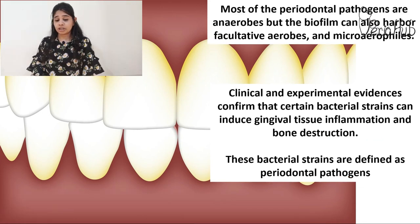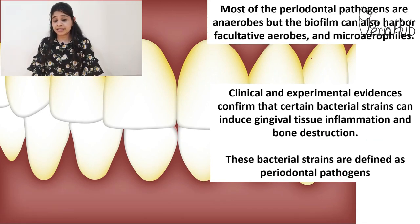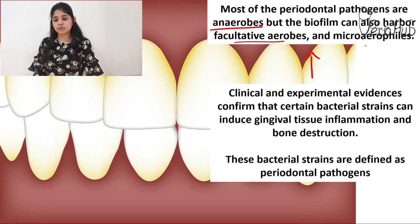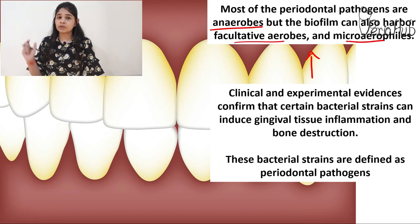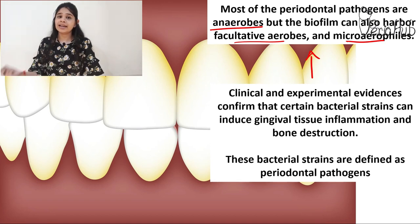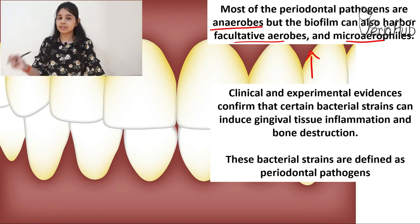Remember, periodontal pathogens are a small minority of microorganisms which can cause gingival inflammation and bone destruction. Most of these periodontal microorganisms are anaerobic in nature, and can also be facultative anaerobes or microaerophiles. These terms have been discussed in the previous broadcast, and I'll link that video on the screen.